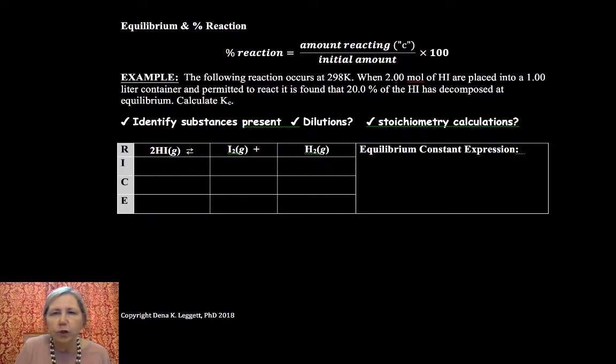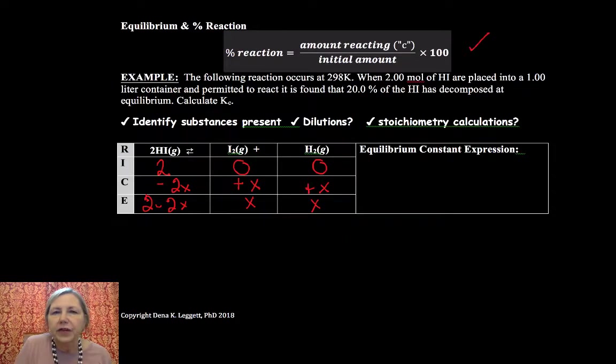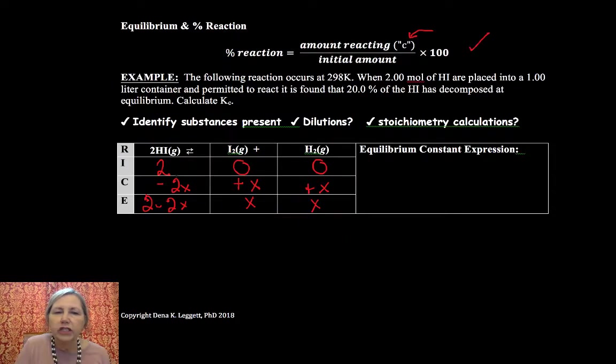So let's take a look at this one. I have 2 moles in a 1 liter container, so I have a 2 molar solution. I have none of my product. Now it tells me that 20% of my HI has decomposed, so I'm going to fill out my chart here.